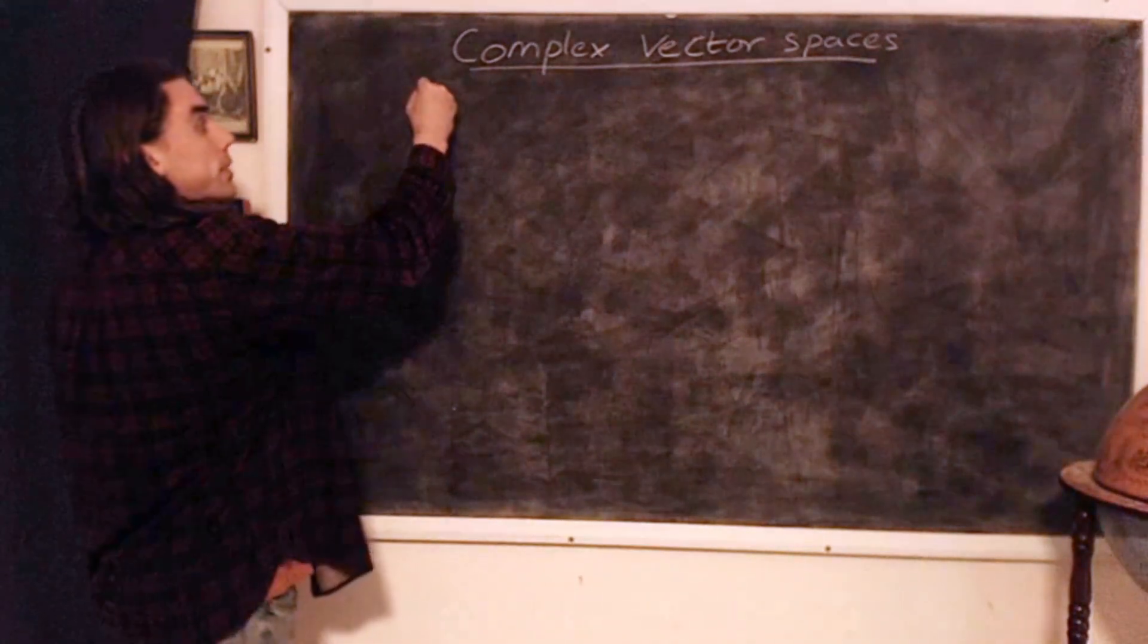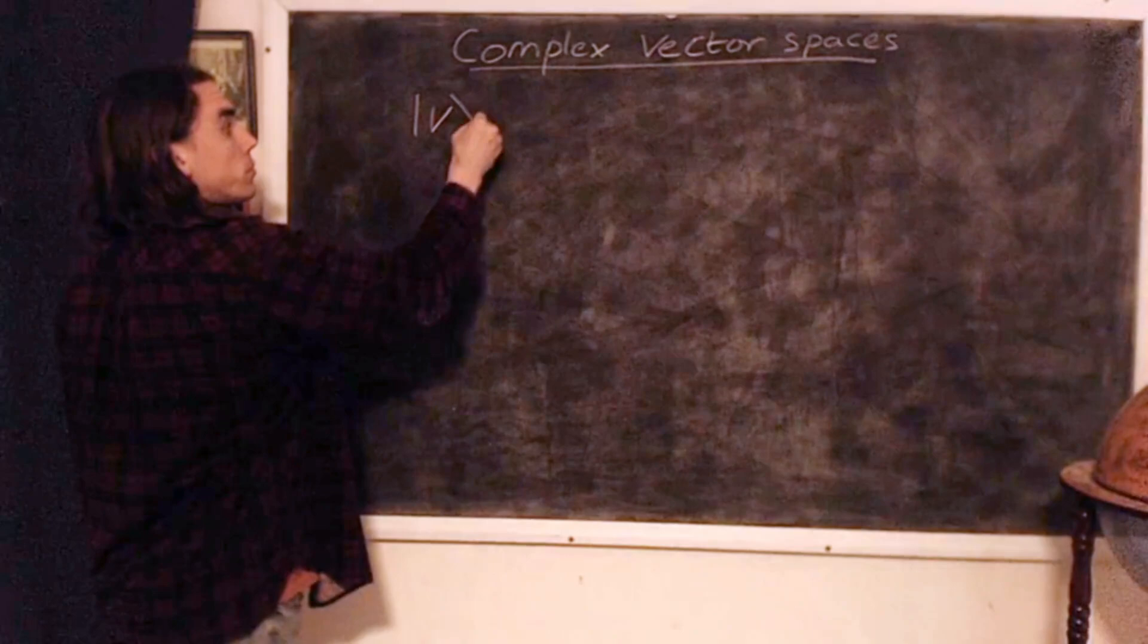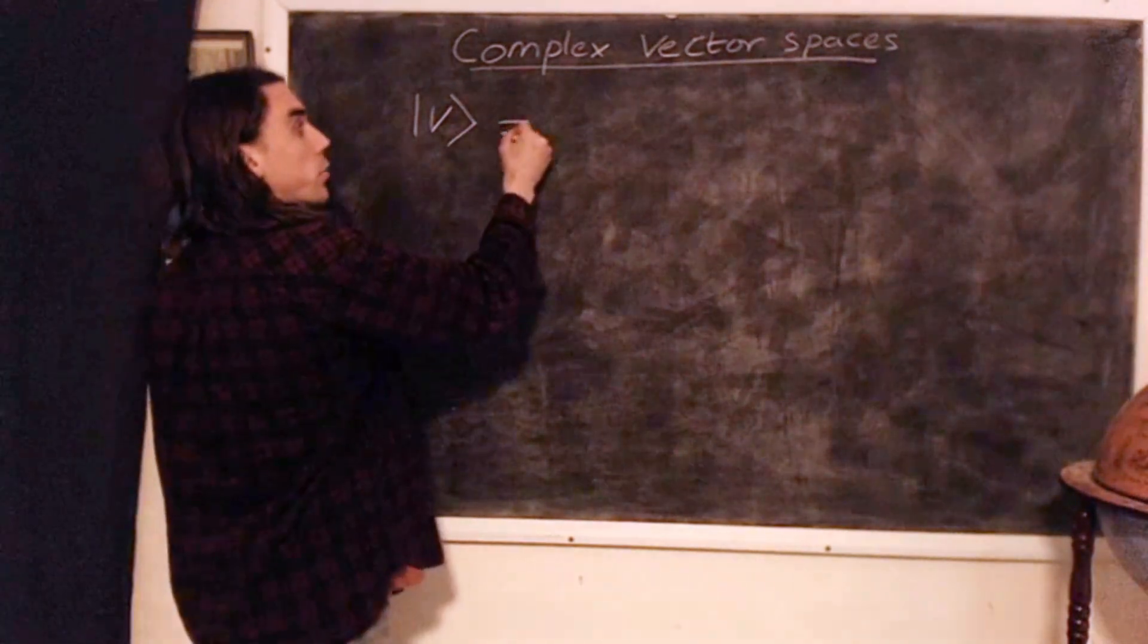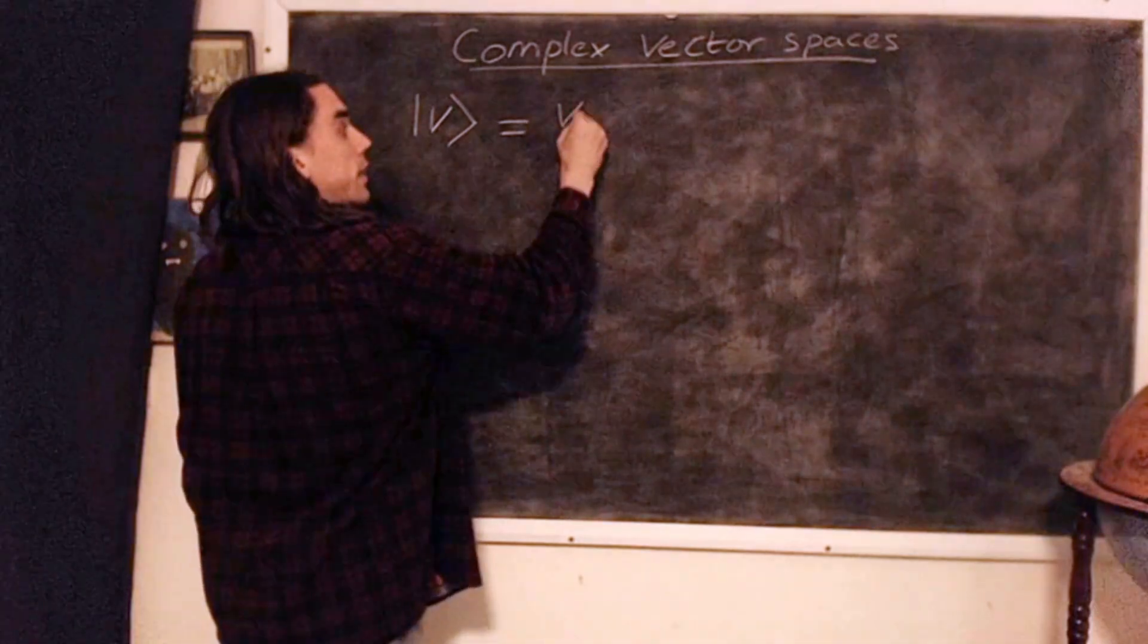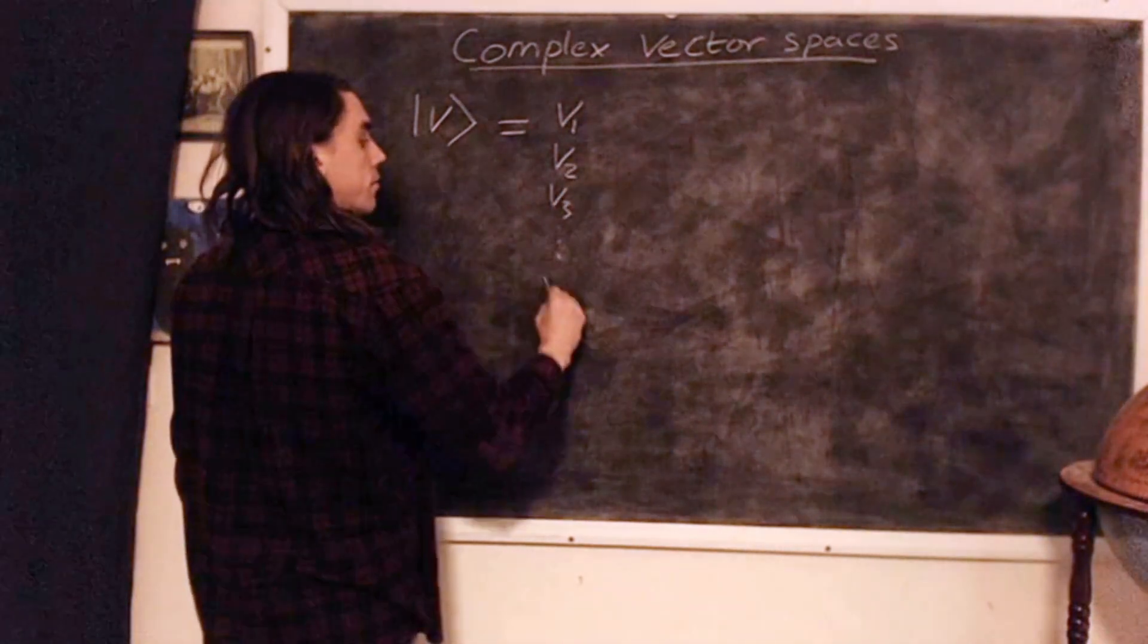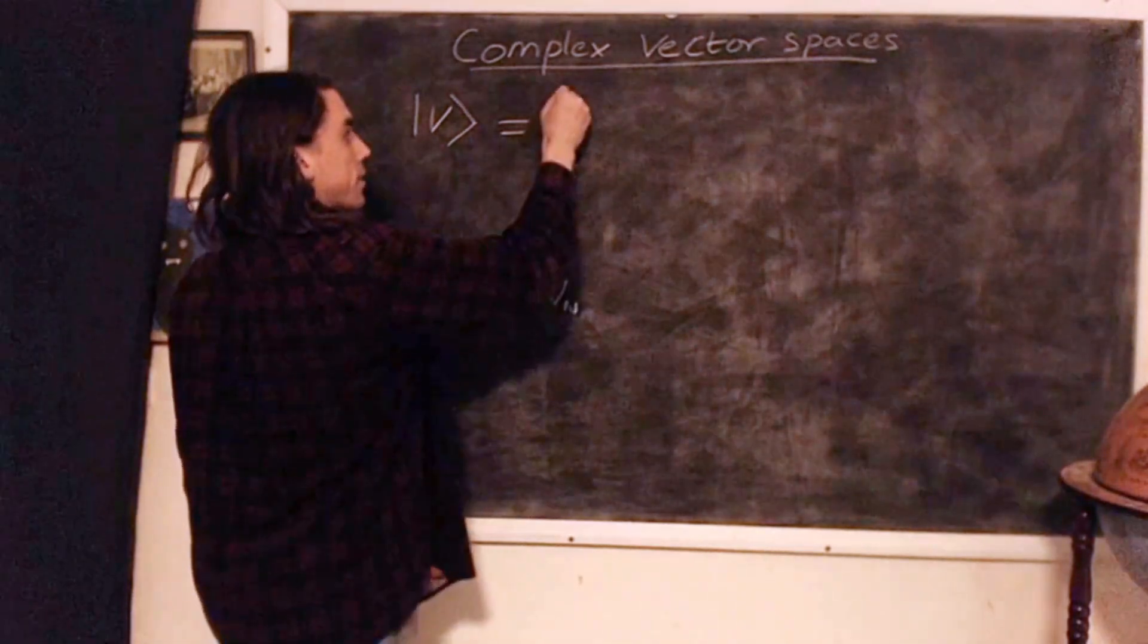denoting vectors like this. So this is some complex vector, which we can write out in full as elements 1, 2, 3, down to n, where n is the dimension of the space.